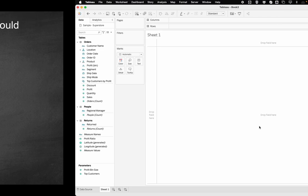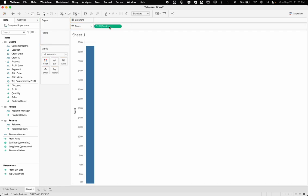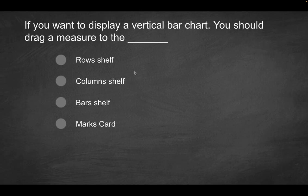So to answer this, let's go into Tableau. I have a blank slate over here. Let's say I wanted to look at profit as a vertical bar. The first option says rows. If I drag this to rows, that gives me a vertical bar. It's standing upright, so that is a vertical bar.